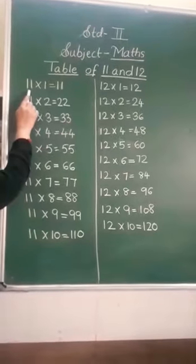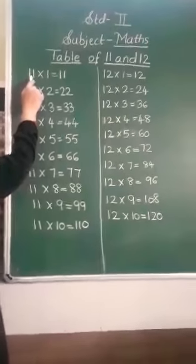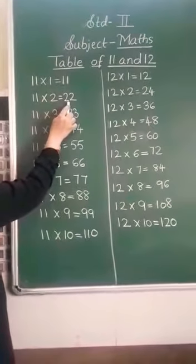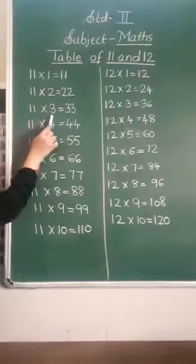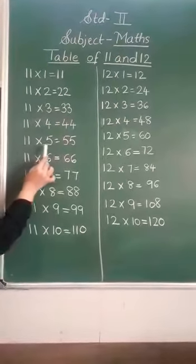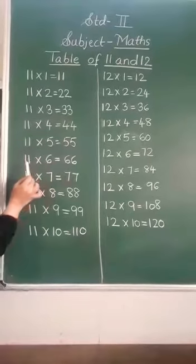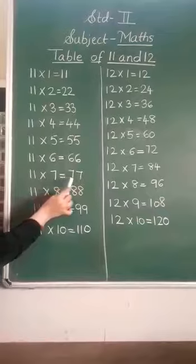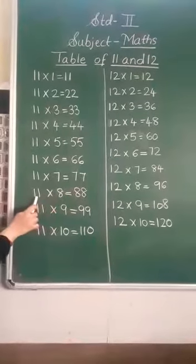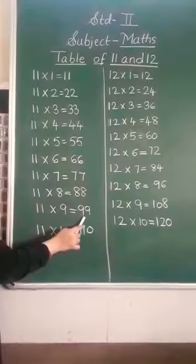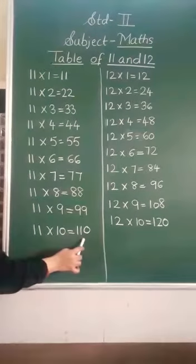Now first start with table of 11. How you do it? 11 ones are 11, 11 twos are 22, 11 threes are 33, 11 fours are 44, 11 fives are 55, 11 sixes are 66, 11 sevens are 77, 11 eights are 88, 11 nines are 99, 11 tens are 110.